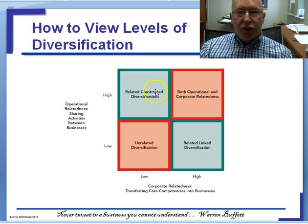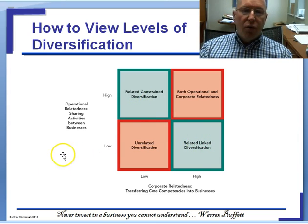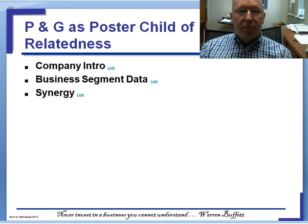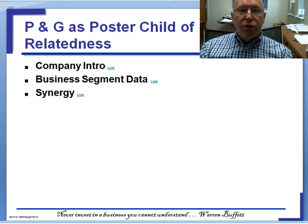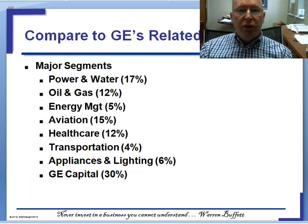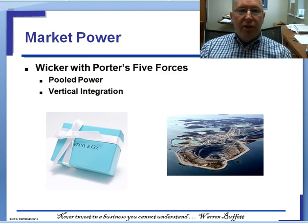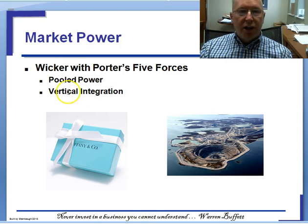Do not worry about the words 'constrained' and 'linked.' I'm simply going to ask you to know unrelated diversification, related diversification, or single business/dominant business. We talked about how Procter & Gamble was a poster child of relatedness and did quite a bit of sharing. Then we looked at GE and showed how they didn't do nearly as much sharing, which was starting to become more unrelated. We also talked about market power and how this often comes through vertical integration.